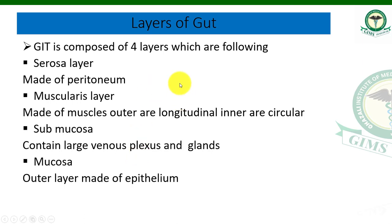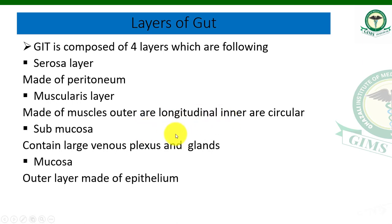Next are the layers of the GIT. The gastro-intestinal tract is composed of four different types of layers. The first is serosa, made of peritoneum. The second is muscularis — a muscle layer with outer longitudinal and inner circular muscles, present in the stomach. The third is submucosa, which contains large venous plexuses and glands. The fourth and last layer is the mucosa, made of epithelium.